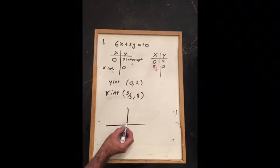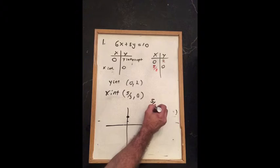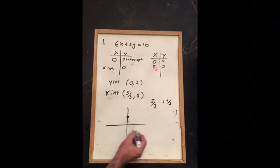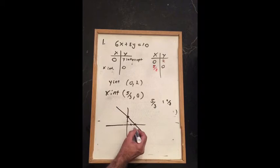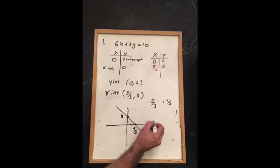To graph it, we go to 0, 2 at this point right here. And then 5 thirds, which is actually equal to 1 and 2 thirds, so we go 1 and about 2 thirds right there. We make a line. As long as I have 5 thirds for x and 2 for y labeled, I should be in good shape.